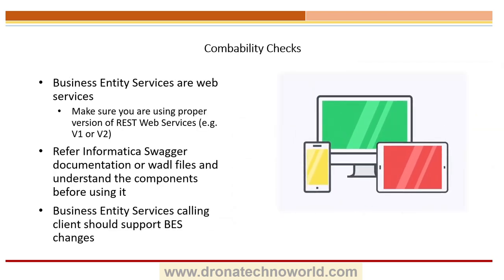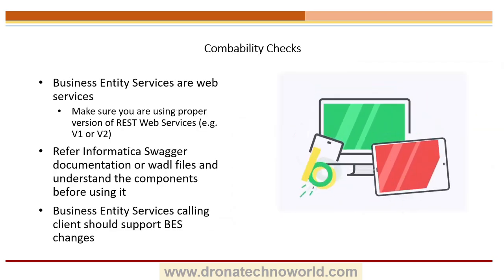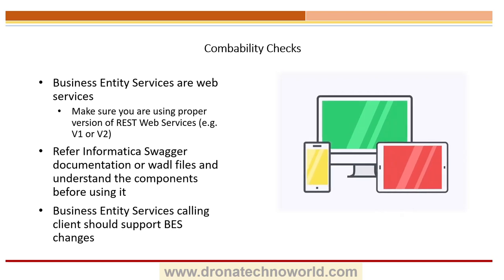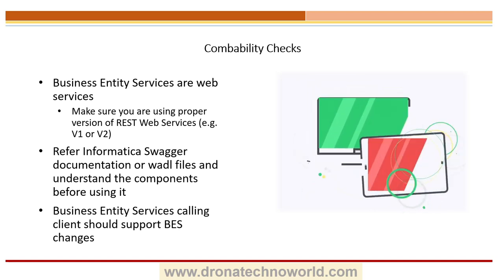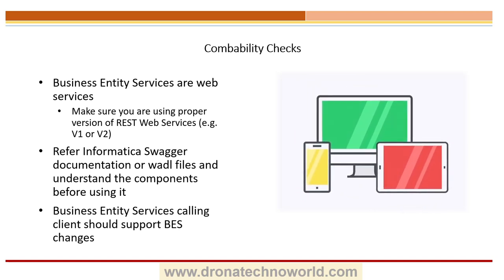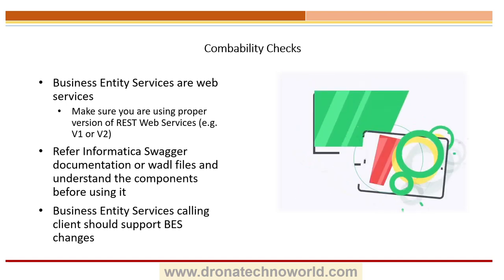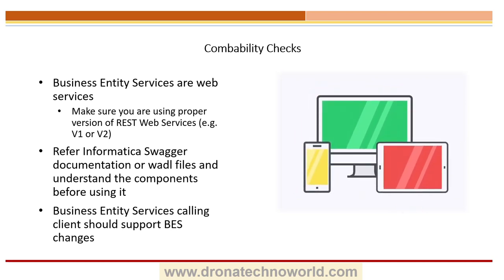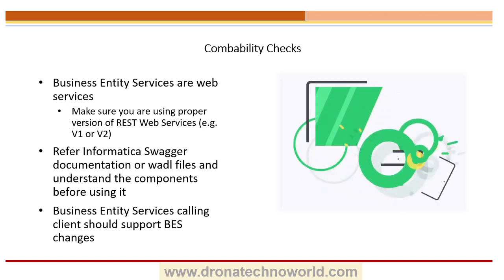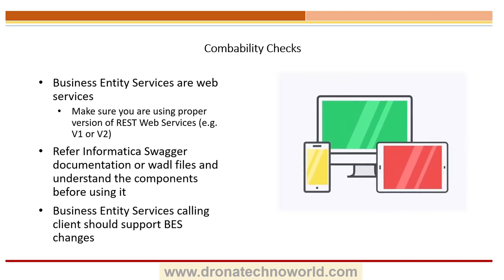The next topic is compatibility. Business Entity Services is a web service and has a few versions like v1 and v2. If you are using a specific version in your calling code, make sure you have compatibility between the Business Entity Services generated by Informatica and whatever component you are calling — whether it is a REST client, an application, or Postman. Make sure you have that compatibility.